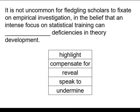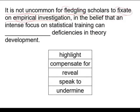Let's first figure out how this sentence works so that we can decide what goes in the blank. The author tells us it is not uncommon for fledgling scholars to fixate on empirical investigation. Fledgling scholars are those without a lot of experience doing research — they're novices — and these novices often fixate or obsess about empirical investigation, which refers to a focus on information that can be verified by observation or experience. So, beginning scholars obsess about hard data.